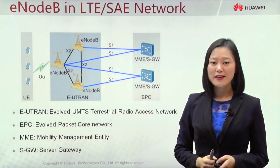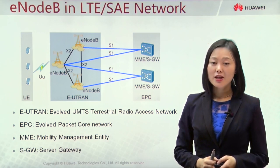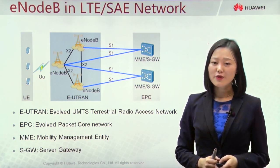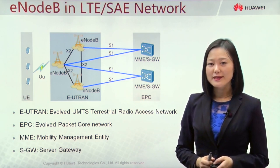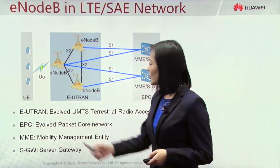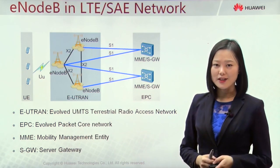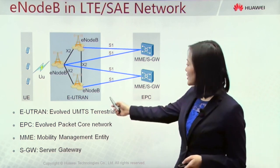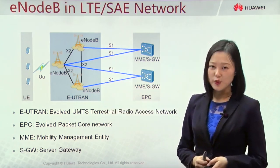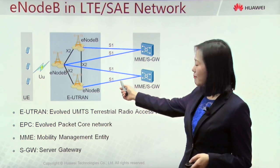As we know, the mobile network has been evolving for many years — from the first 2G network, the GSM network, which was launched commercially in the 1980s, till today's 4G, the fourth generation network. This picture illustrates the network architecture of the fourth generation network. We can see it is comprised of three parts: first is UE, the user equipment; second is the E-UTRAN, the radio access network part; and the third is EPC, the core network part. The E0B is the only element inside the E-UTRAN network — it connects with UE by the UU interface, and connects with EPC by the S1 interface.